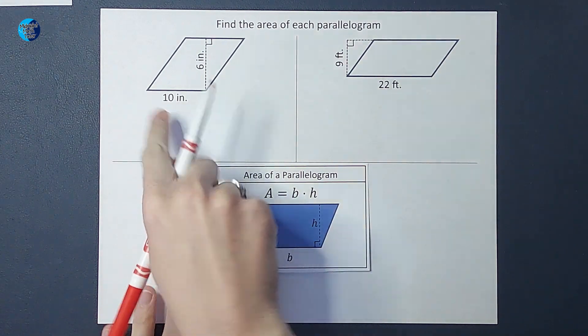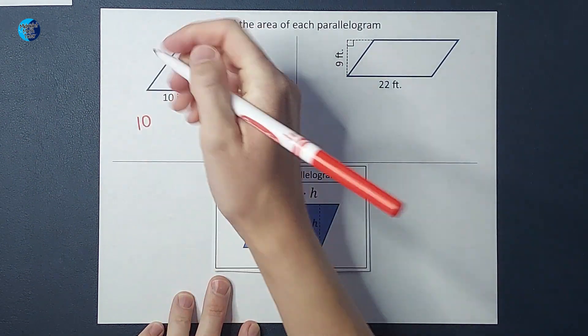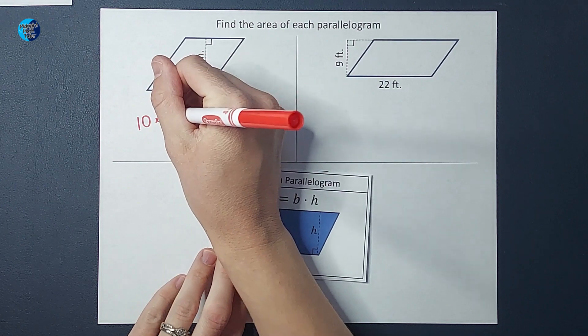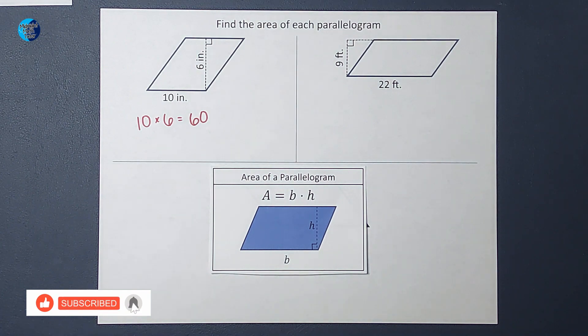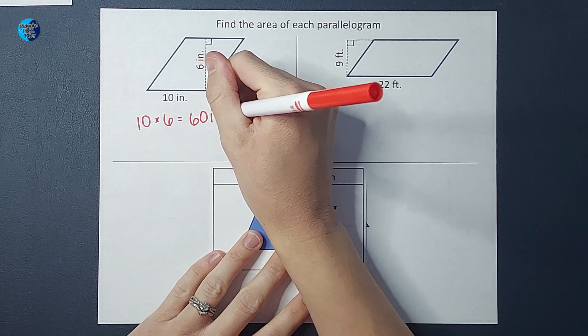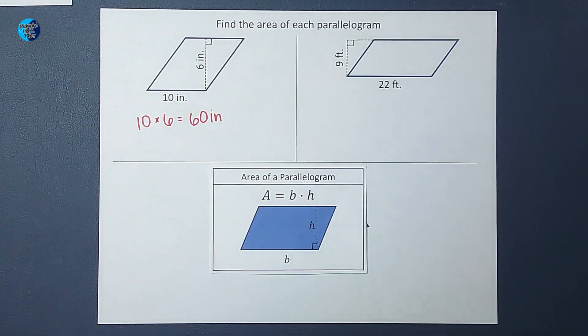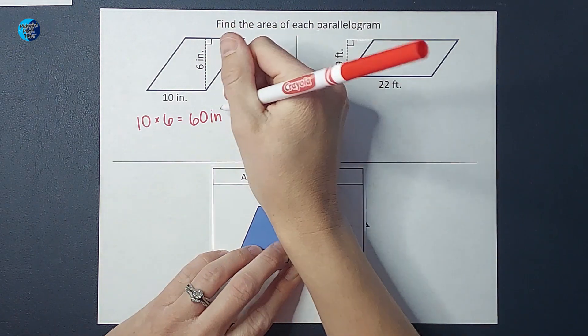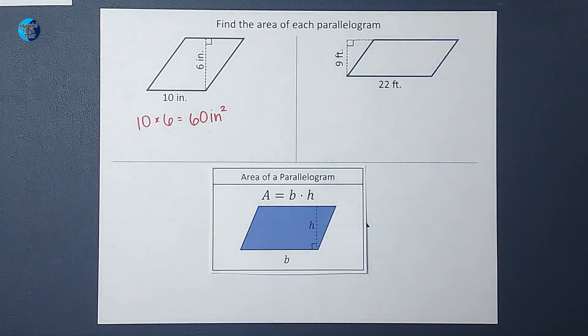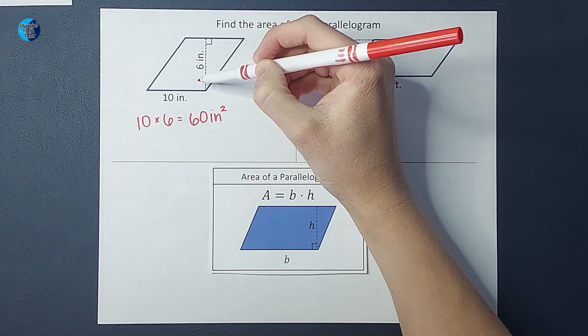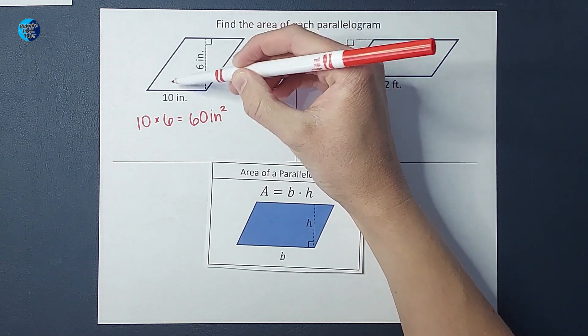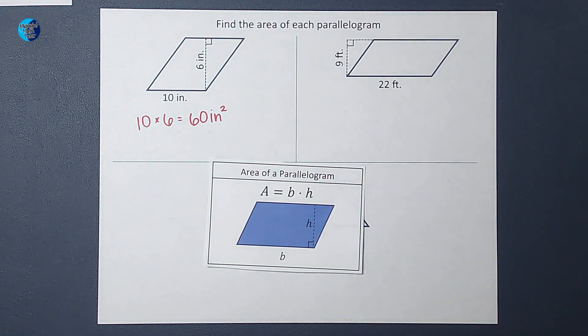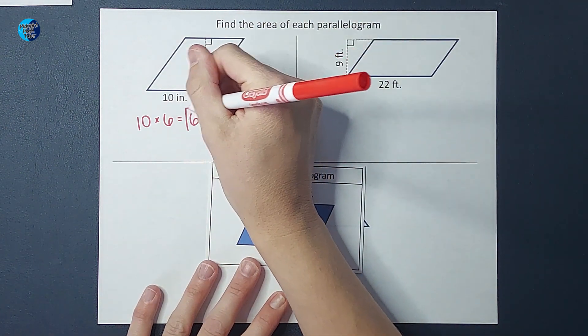So here we've got our base is 10 times our height which is 6, and I end up with 60. Now when we're working with area, it's really important to remember our units, because the area is not 60 inches. The area is 60 inches squared, and what that means is 60 little boxes that are 1 inch by 1 inch would fit inside of this parallelogram. That is what area means.